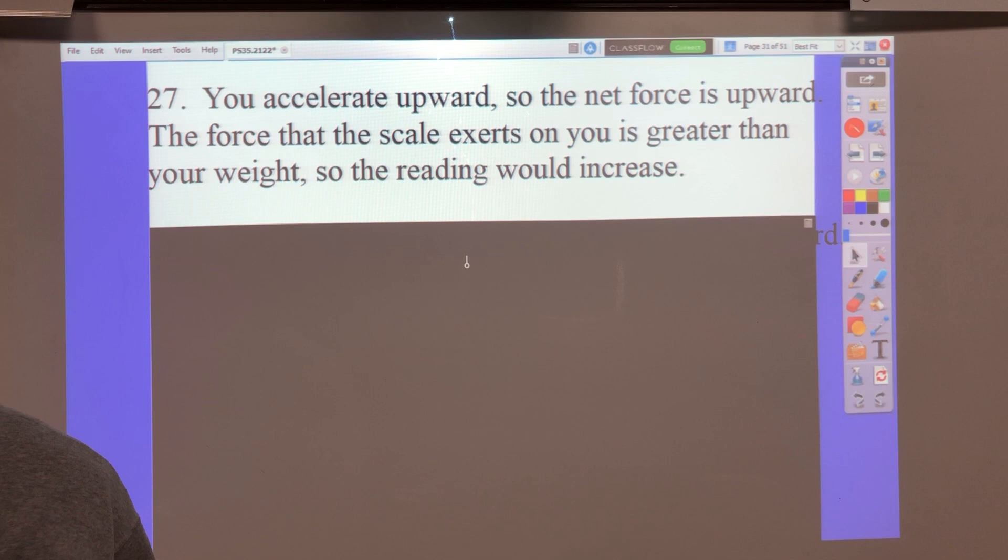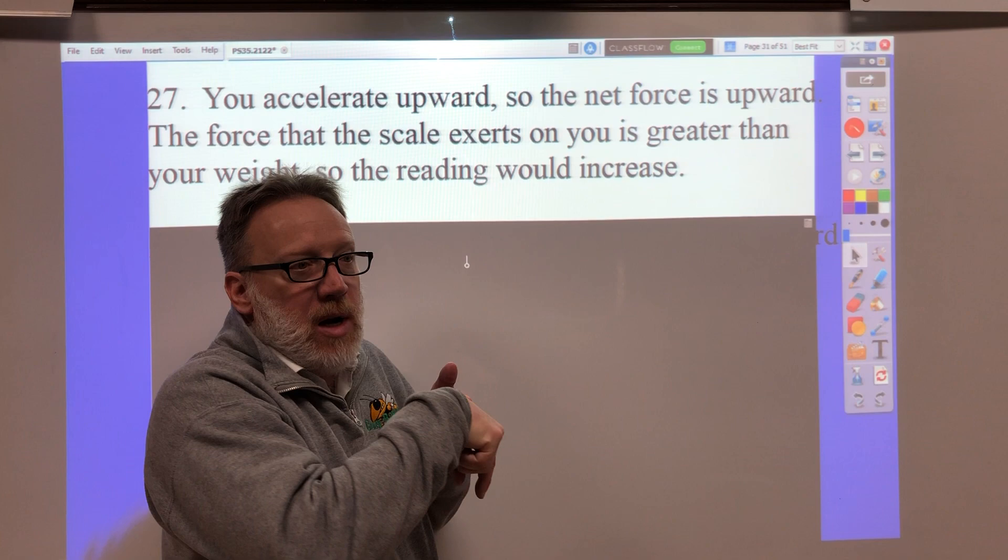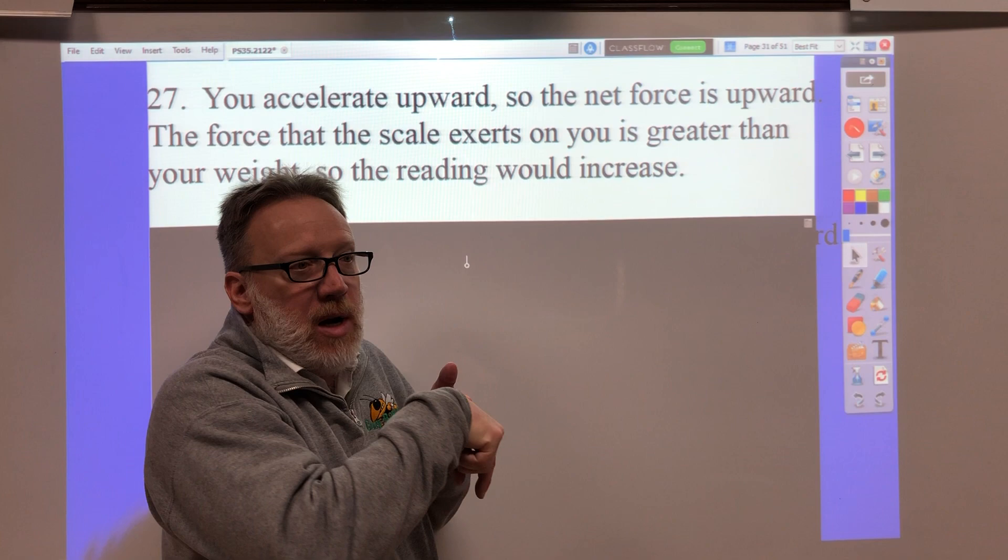Number 28. A fuel-filled rocket is at rest. It burns its fuel and expels hot gas. The gas has a momentum of 1,500 kilograms times meters per second forward. What is the momentum of the rocket? It's not a math problem. If the gas has a momentum this way, the rocket has an equal and opposite momentum this way. They're going to be equal and opposite momentum. So the momentum of the rocket is 1,500 kilograms times meters per second forward.